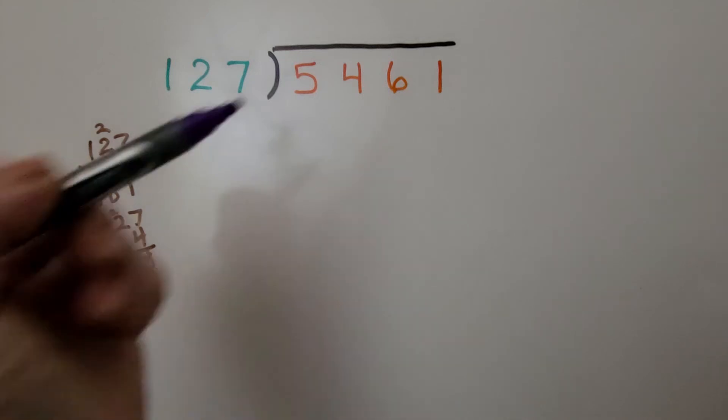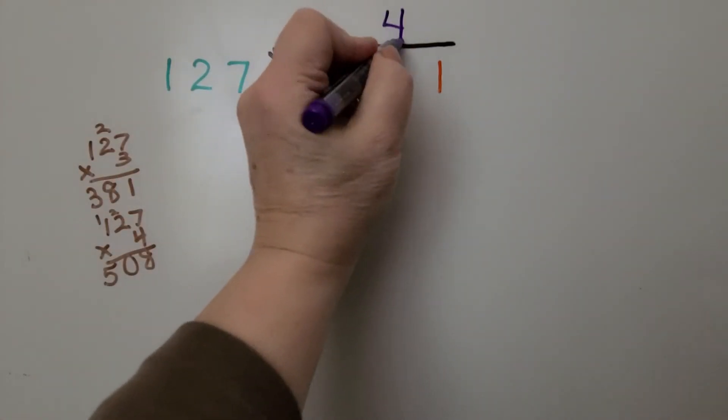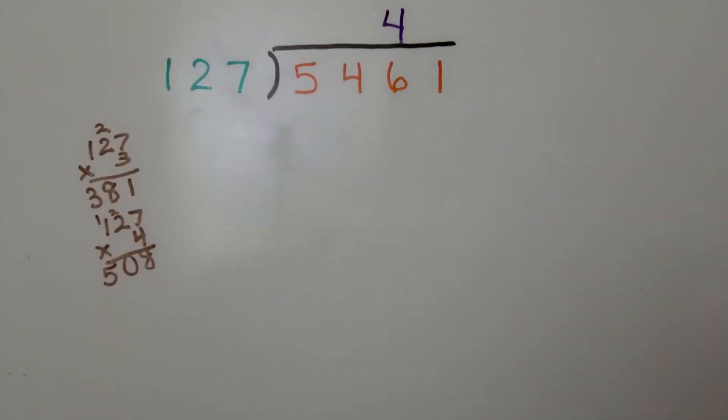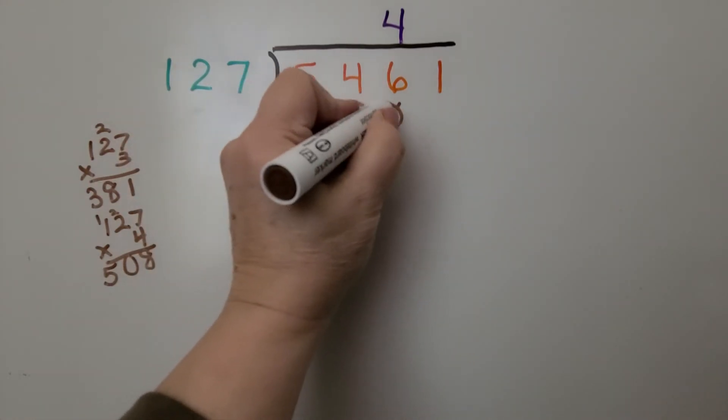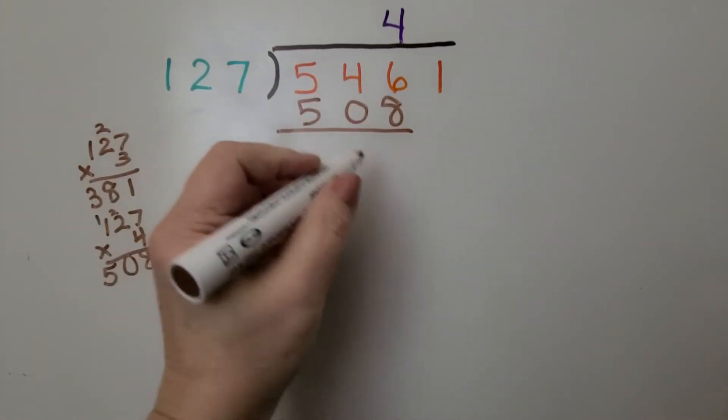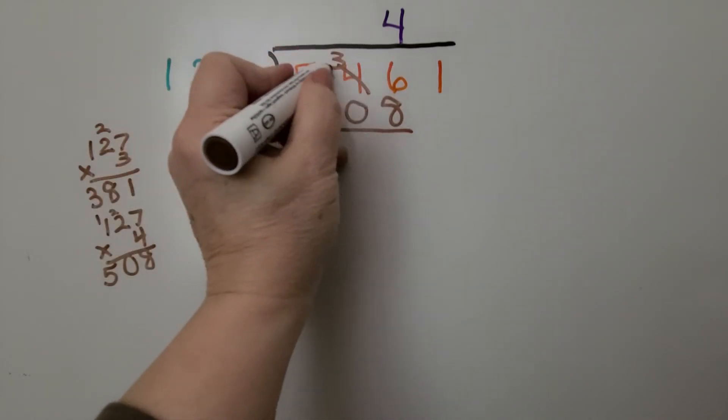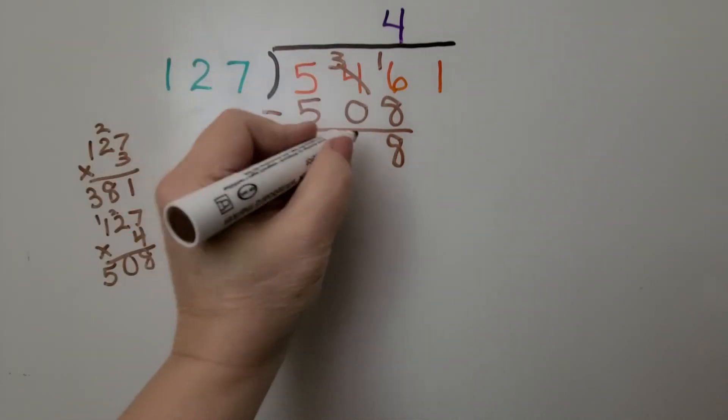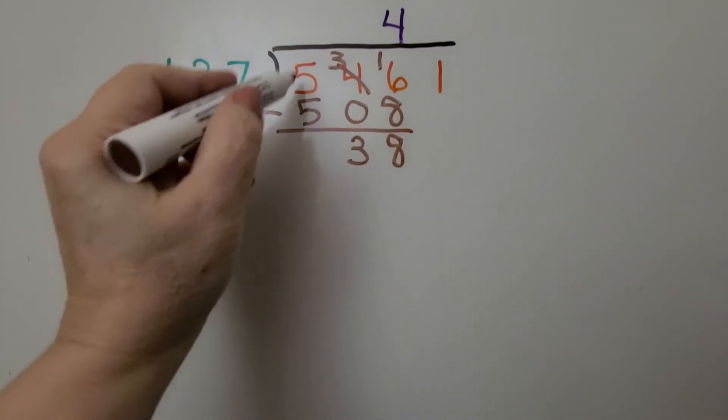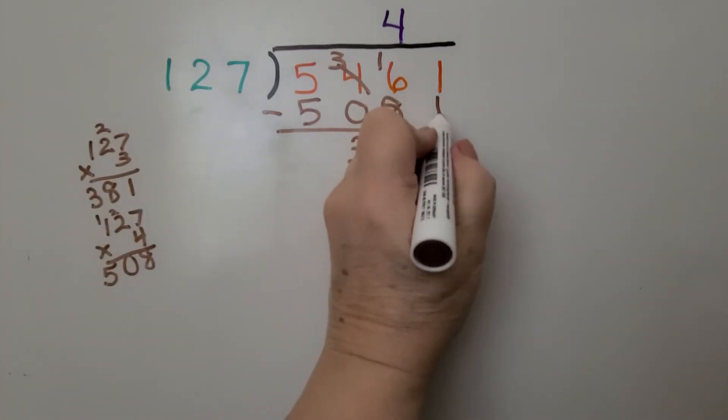That's going to go above the 6 because we put it into the 546. And now we know 127 times 4 is 508, and that's what we're going to take away. We rename and subtract. And now it's this 1's turn to come down.